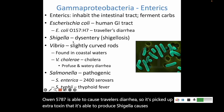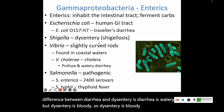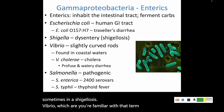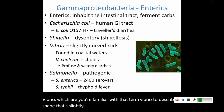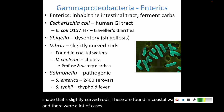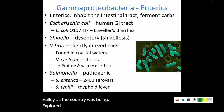Shigella causes dysentery. The difference between diarrhea and dysentery is that diarrhea is watery, but dysentery is bloody — so dysentery is bloody diarrhea, sometimes called shigellosis. Vibrio — the slightly curved rods — are found in coastal waters and were associated with many cases along the Mississippi River Valley as the country was being explored. Vibrio cholerae causes cholera, which is another profuse and watery diarrhea.